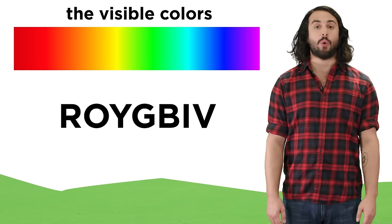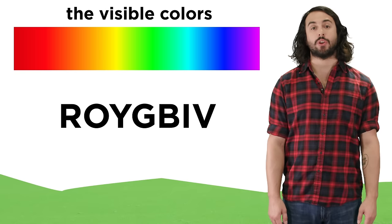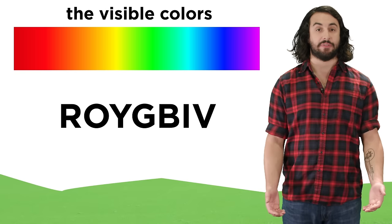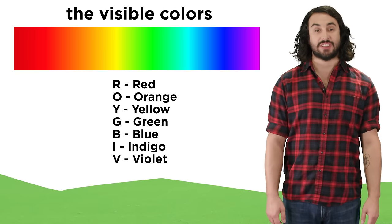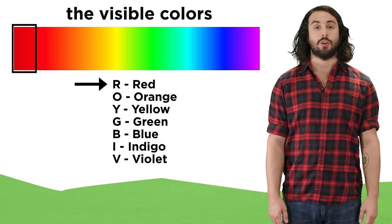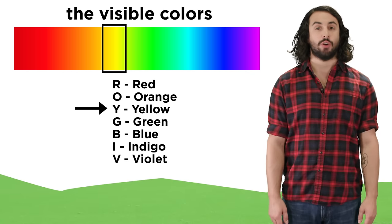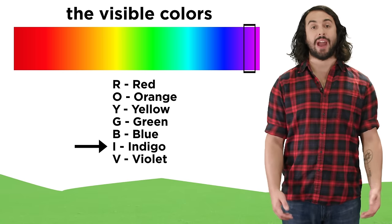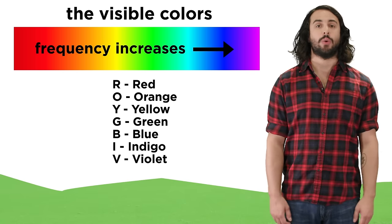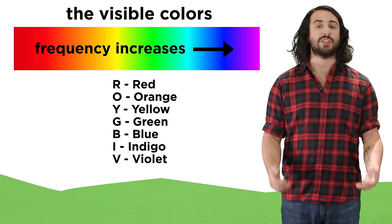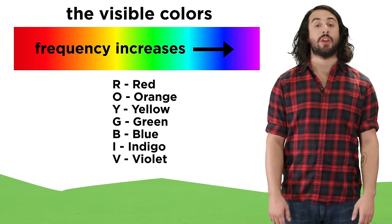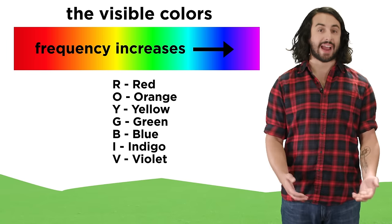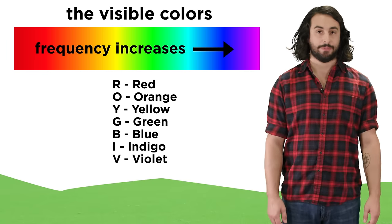The order of these colors can be remembered with the mnemonic ROYGBIV. This stands for red, orange, yellow, green, blue, indigo, and violet, which lists the visible colors from lowest frequency to highest frequency.